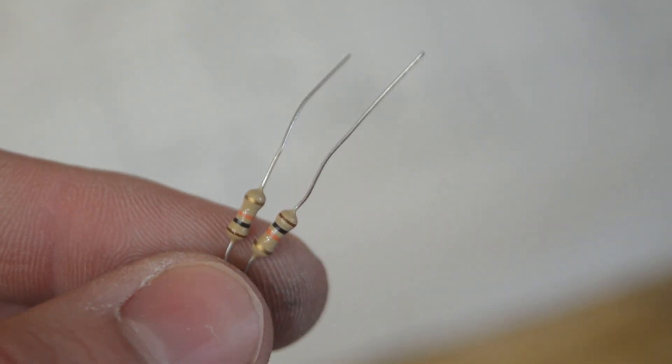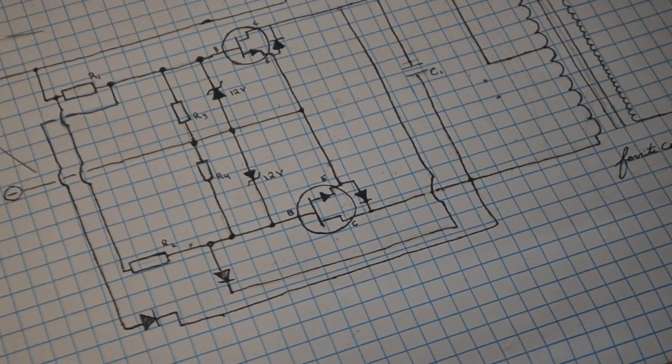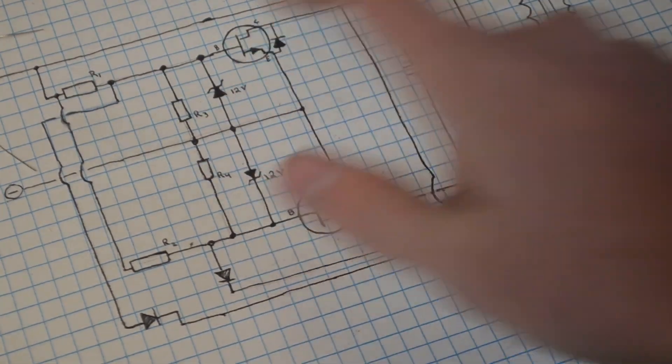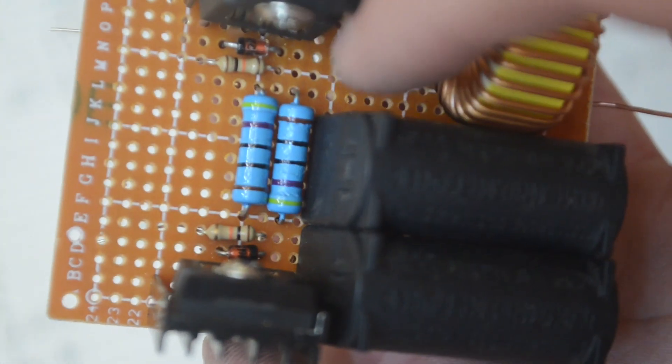The next thing we need to add are these two 10,000 ohm resistors. As you can see on the circuit these two resistors go side by side with the Zener diodes. And so as you can see I've inserted them into the perf board right next to each Zener diode.